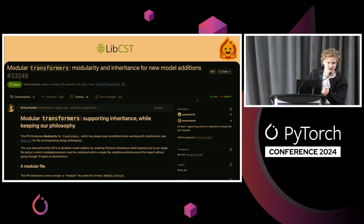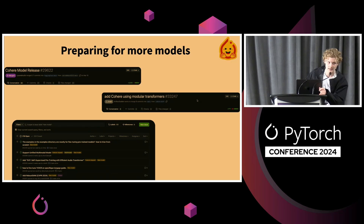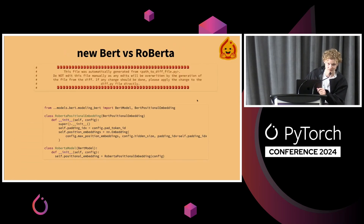People have had fights in the community — some are against, some are for — but with this we believe we've reached a middle ground. We want to prepare for a lot more new models. We have around 200 issues in Transformers tagged 'new model,' plus many pull requests that have become stale. We know it's a barrier for people to contribute, so we really want to reduce that barrier. For example, the Cohere model release was about 3,000 lines of code, but with modular Transformers it only takes about 700 lines. Julien is finally going to get what he wants — the new Roberta model will be much smaller, and every auto-generated model will have a header telling you about it.